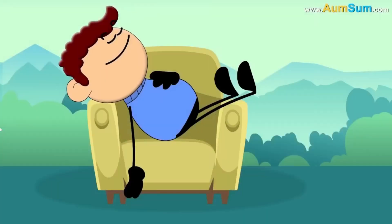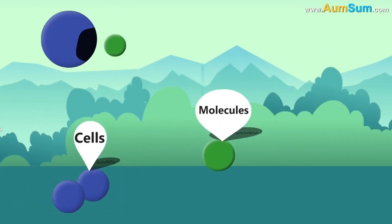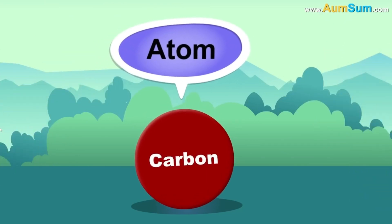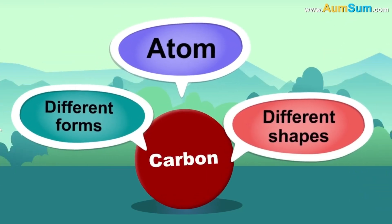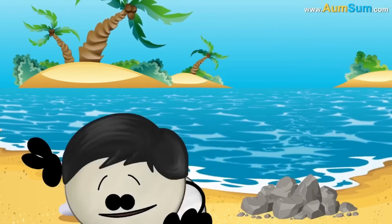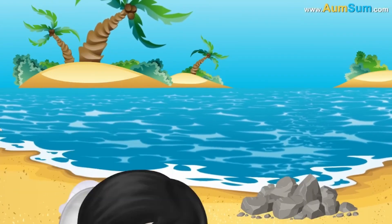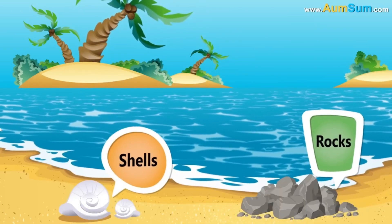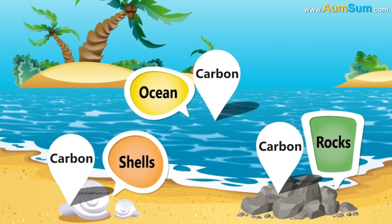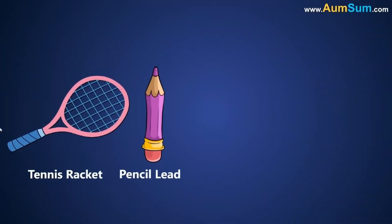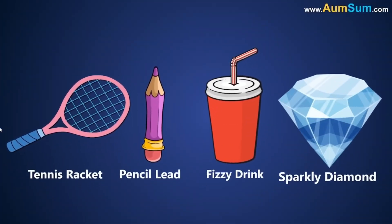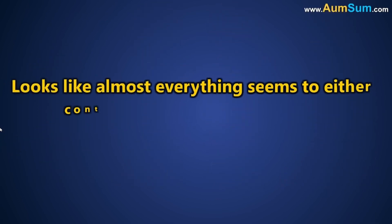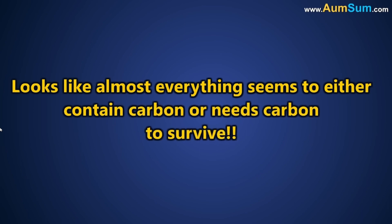How? We all are made up of cells. Cells contain molecules, which contain atoms. Carbon is one such type of atom. But it comes in different shapes and forms. Almost everything that you see at the beach — the rocks, the shells, even the ocean — contains carbon. Even a tennis racket, the lead of your pencil, your favorite fizzy drink, or even a sparkly diamond — they all have carbon.